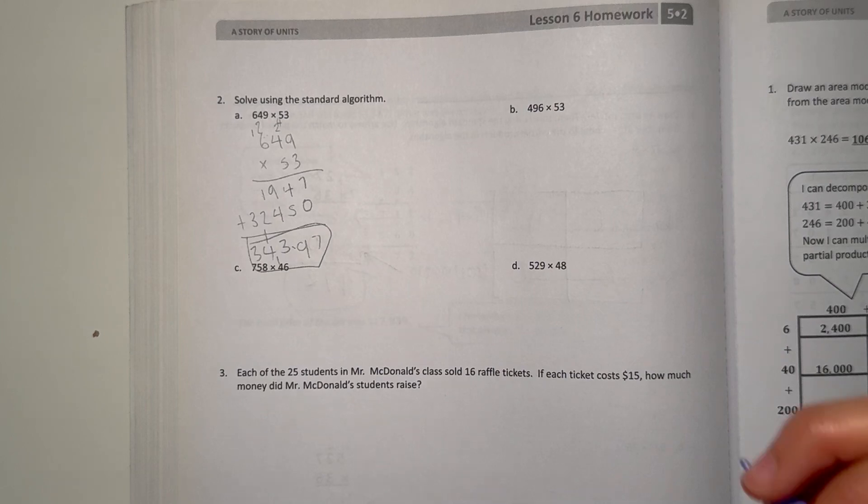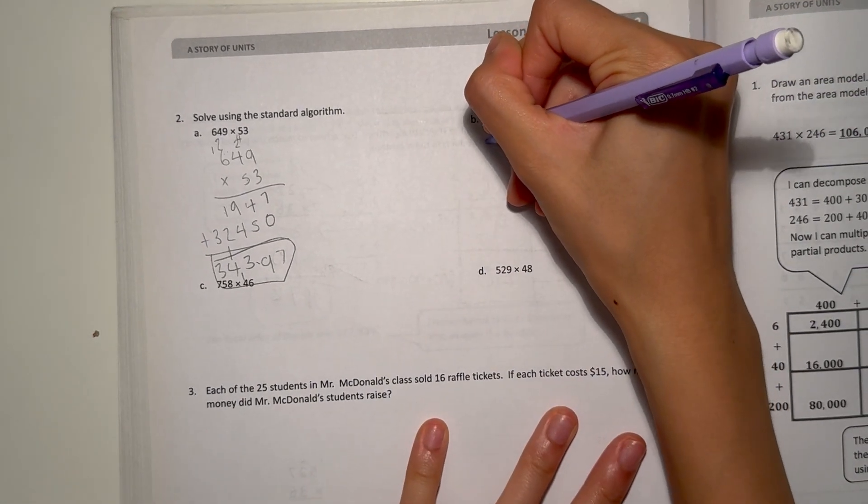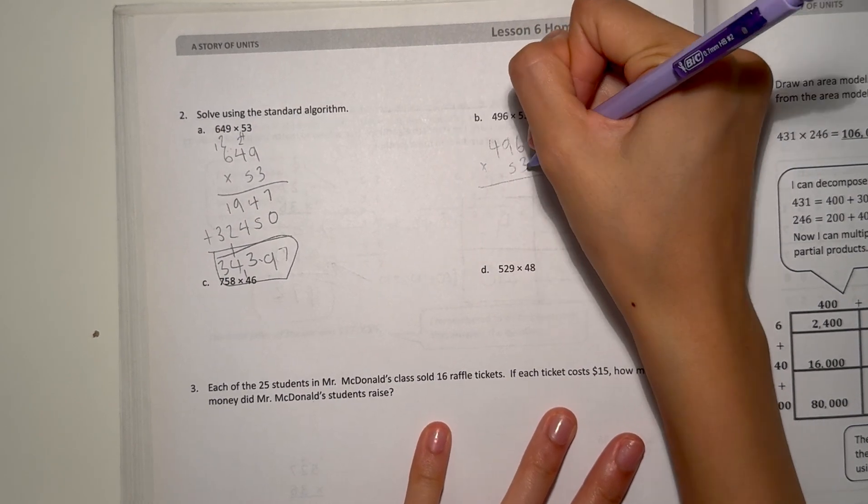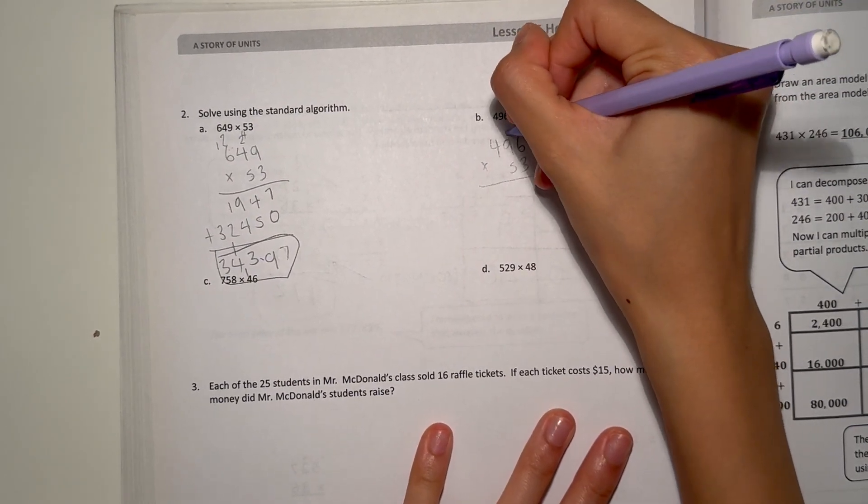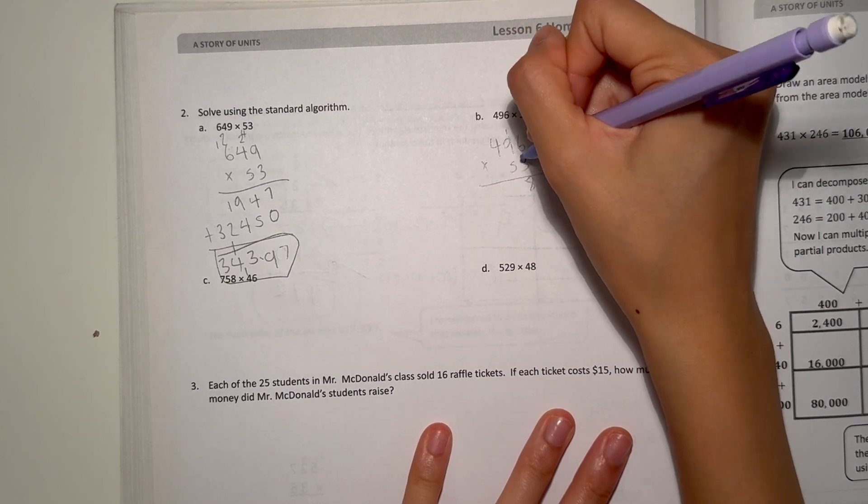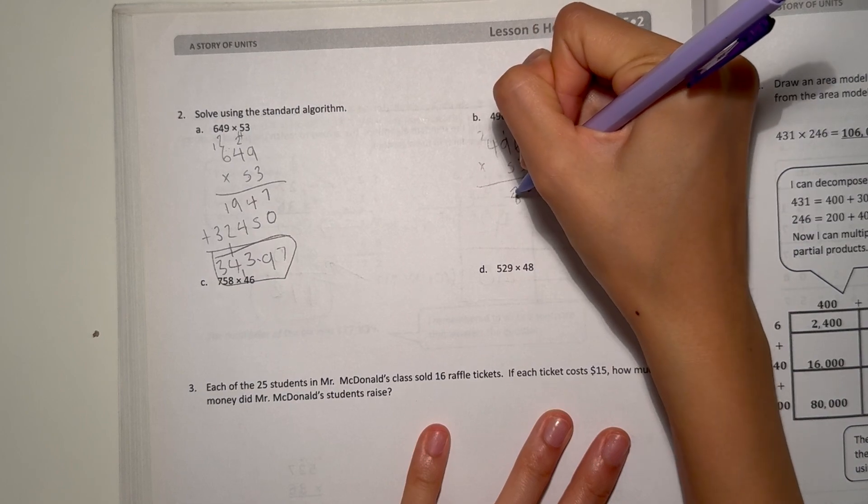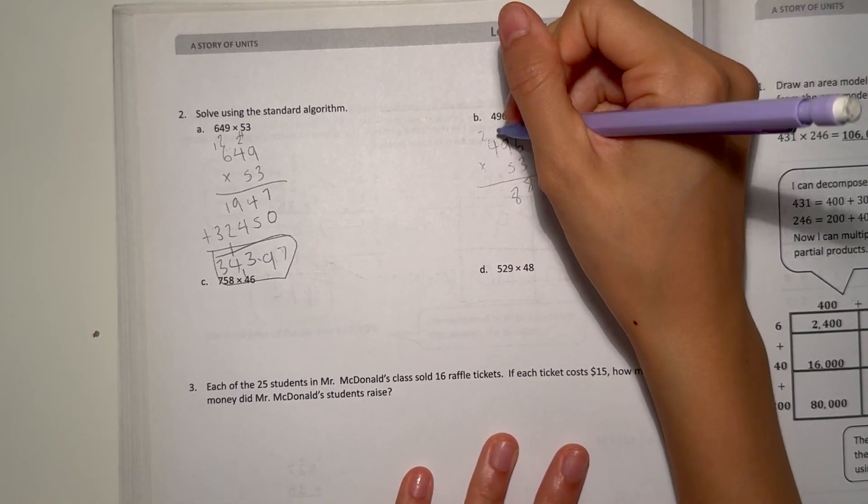Let's look at B now. We have 496 times 53. Let's look at the 3. 6 times 3 is 18. 9 times 3 is 27. Plus 1 is 28. And 4 times 3 is 12. But plus 2 is 14.